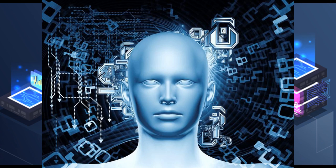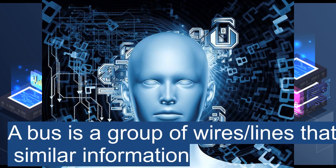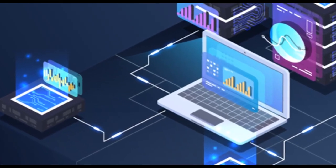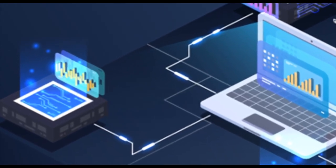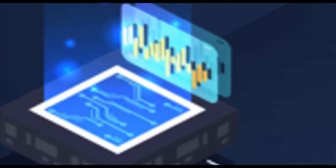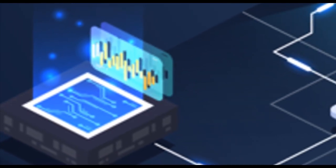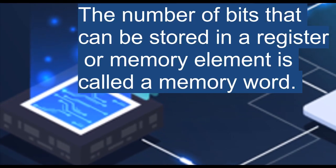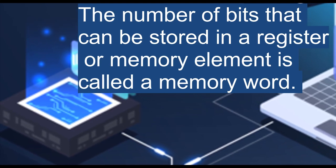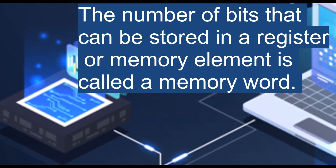Bus: A bus is a group of wires or lines that carry similar information. System bus: The system bus is a group of wires or lines used for communication between the microprocessor and peripherals. Memory word: The number of bits that can be stored in a register or memory element is called a memory word.